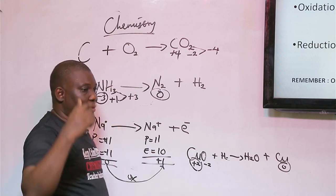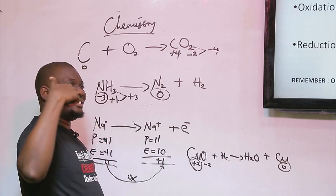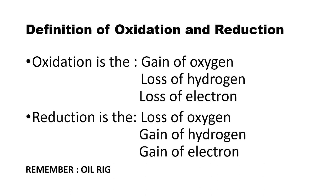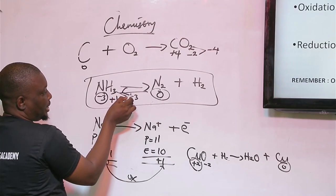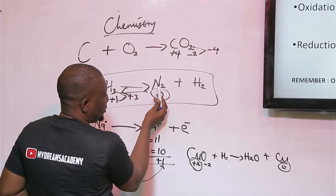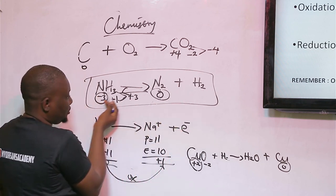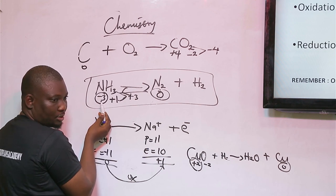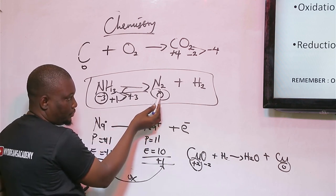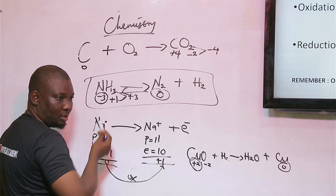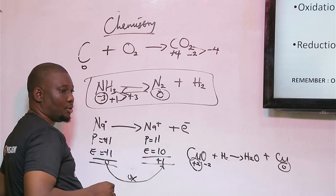In the second aspect, where we defined oxidation as loss of hydrogen, reduction is the gain of hydrogen. Referring back to the earlier reaction: nitrogen gains hydrogen going from N2 to NH3. In N2, nitrogen is zero, and going to NH3 it is minus 3. So nitrogen changes from zero to minus 3 — a clear case of reduction, which is the gain of hydrogen.